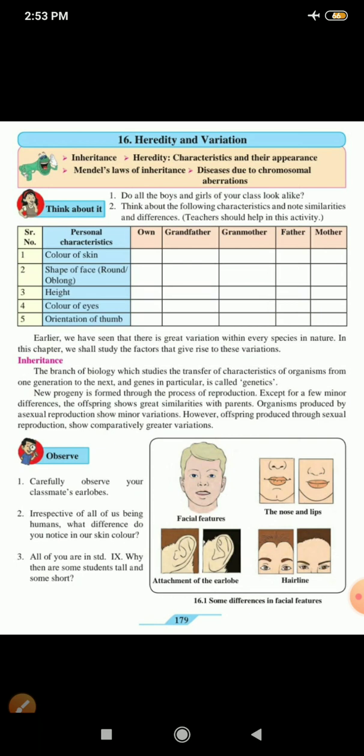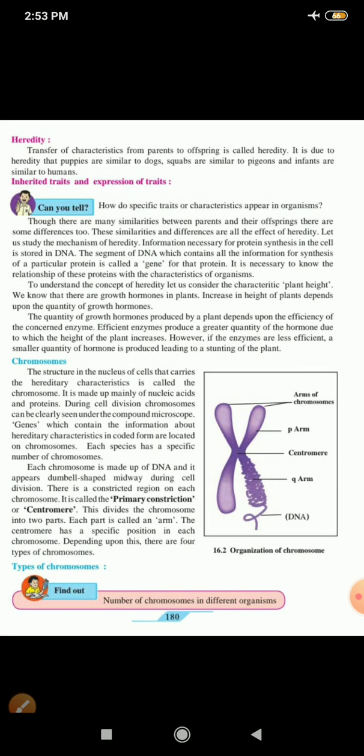Now, let us observe these figures here given in table 16.1. Some differences in the facial features. Now, carefully observe your classmates ear lobes. See, some of the ear lobes are attached and some are loose. Irrespective of all of us being humans, what differences do you notice in the skin color? Irrespective of all of you are in standard 9, why then are some students tall and some short? So in this table, you can see the facial features. The nose and the lips are different of each one of us. The hairline is different. But why is this occurring? So let us study why this happens.